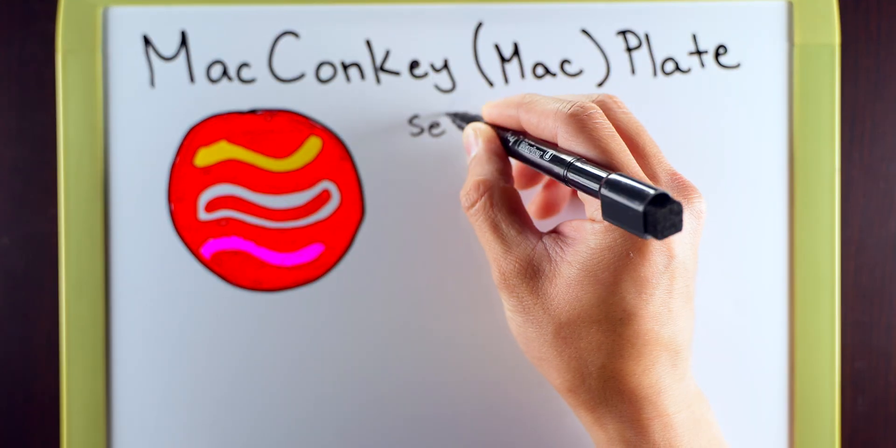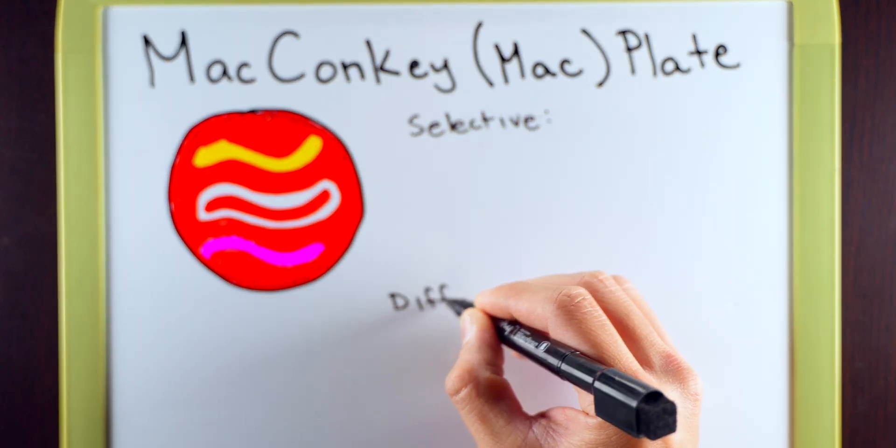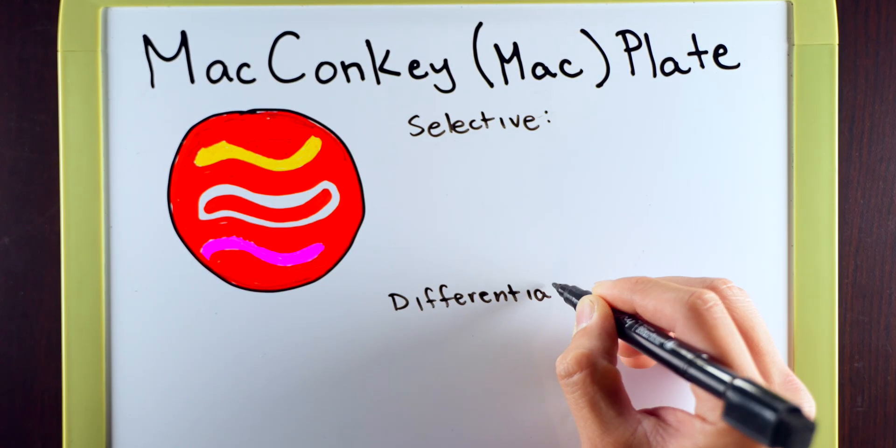Your MacConkey auger or MAC plate has two components to it. One is going to be selective and the second is going to be differential.